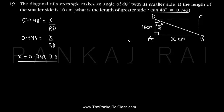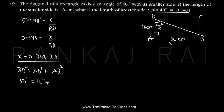Now what about BD? To find BD, let us apply the Pythagorean theorem in triangle BAD. So BD² = AD² + AB². AD is given as 16, so that is 16² plus AB². AB is X centimeters, so that gives BD² = 256 + X².